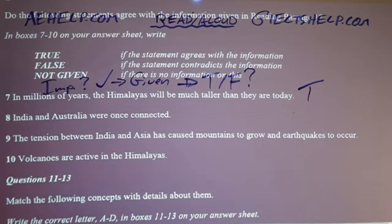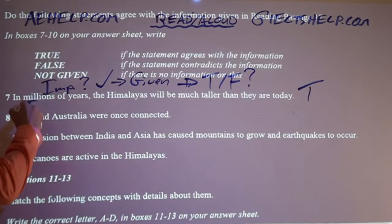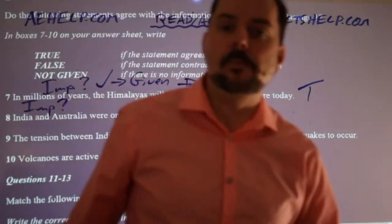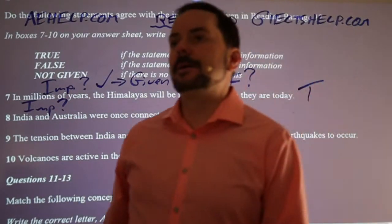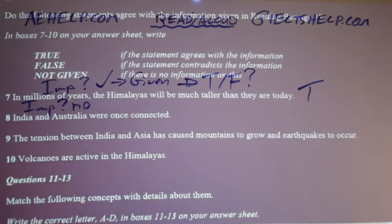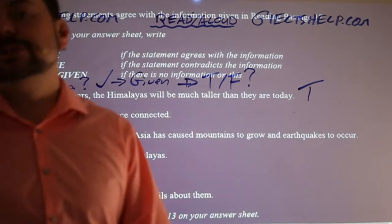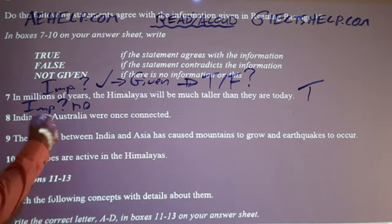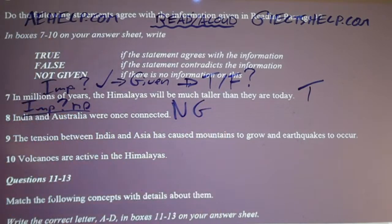Number eight: 'India and Australia were once connected.' Is it important to know whether India and Australia were once connected for the formation of the Himalayas? No — it's not important. It's going too far back in time. The world has changed shape throughout billions of years but we're not looking at that time frame. When you have a 'no' to the first question about importance, then it's an obvious not given — because it's not important to the passage.